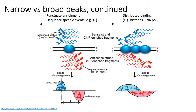It's worth discussing why there can be both narrow and broad peaks in ChIP-seq assays. For highly specific DNA-binding transcription factors, after the cross-linking and fragmentation step, fragmentation tends to occur pretty close to the binding site on either side of the TF. So your forward and reverse strands align pretty close to the binding site of interest, and after strand cross-correlation you end up with a sharp peak at the TF binding site.